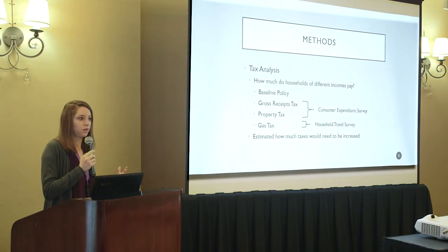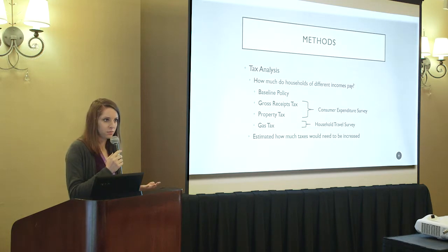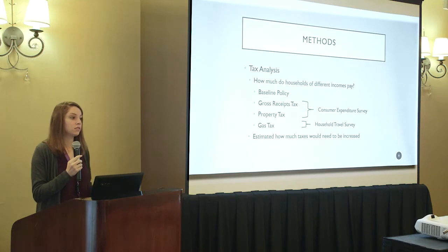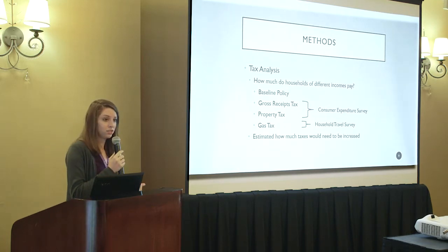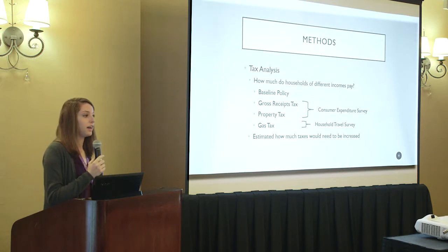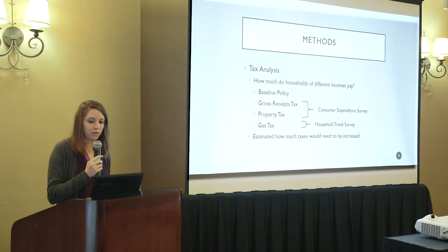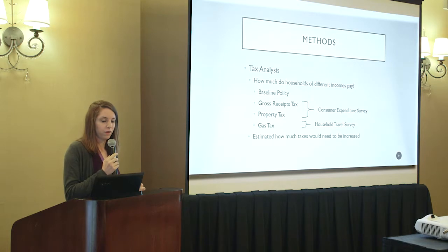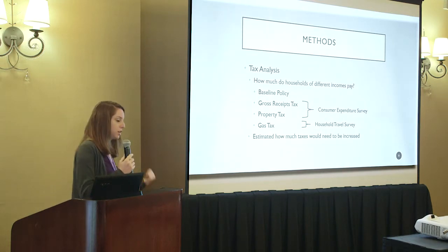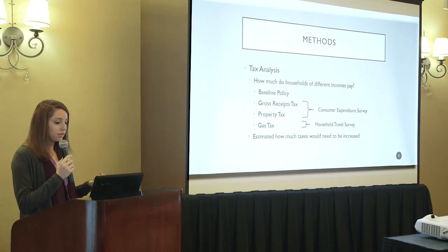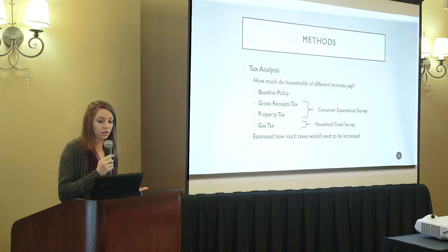We then looked at how to pay for these repairs. We examined a baseline policy — the current policy requiring adjacent property owners to pay — and three tax alternatives: gross receipts tax (essentially a sales tax in New Mexico), property tax, and gas tax. Data on gross receipts and property taxes came from the Consumer Expenditure Survey, and gas tax information came from the household travel survey, which tracks trips and miles traveled. We then calculated how much each tax would need to increase to cover repair costs compared to the baseline.